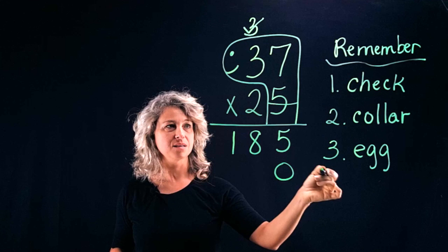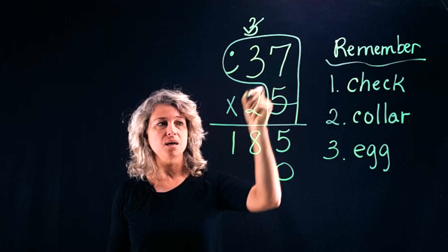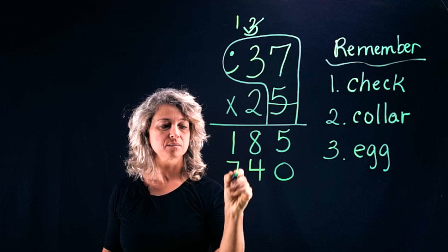So check, collar, lay the egg. Now if you remember these three things you're sure not to fail. Now we're going to go on and move to the tens place and multiply two times seven. Now remember to crisscross. Two times seven is fourteen. Two times three is six, plus one is seven.